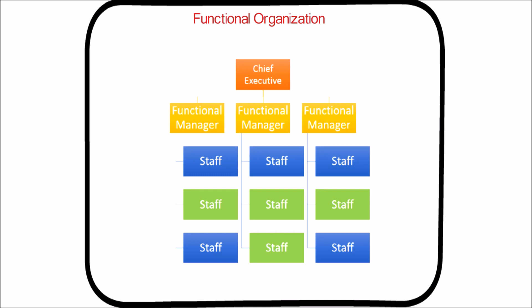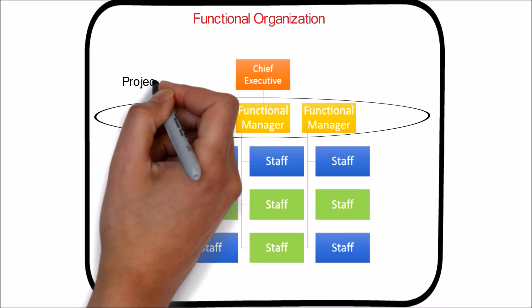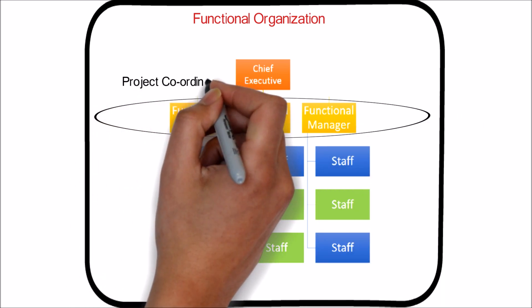Specialties may be further subdivided into focused functional units, such as mechanical and electrical engineering. Each department in a functional organization will do its project work independently of other departments. As highlighted in the example, the project coordination happens at the level of functional managers.